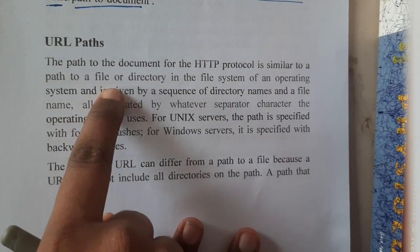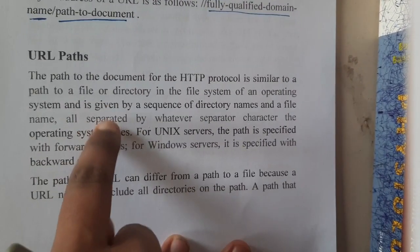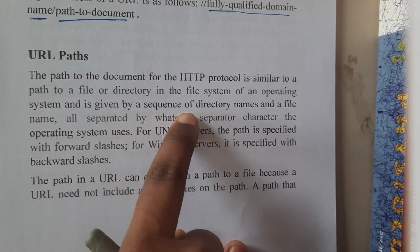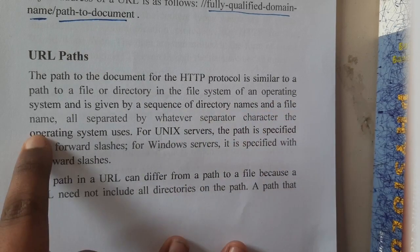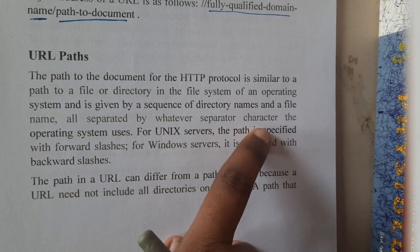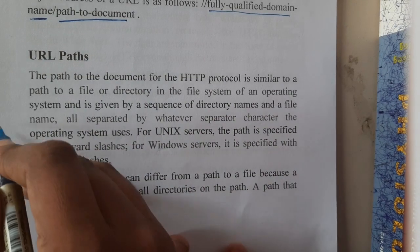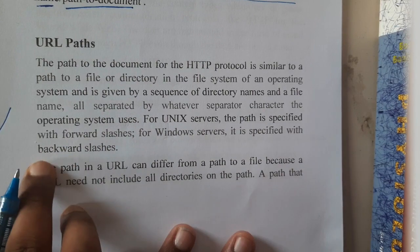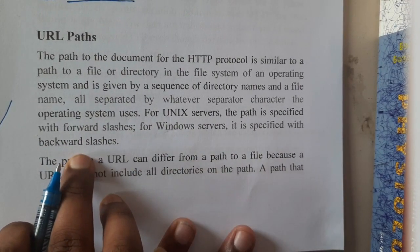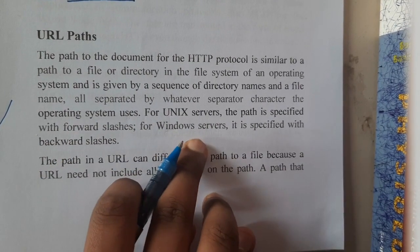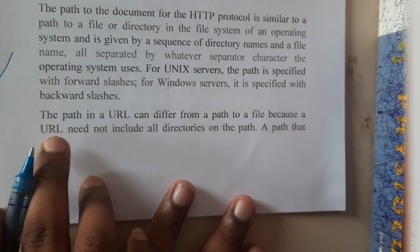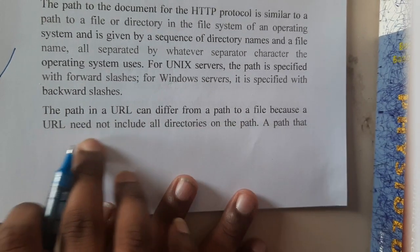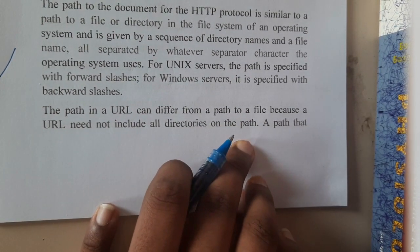The path to the document for the HTTP protocol is similar to the path of the file in the file system of the operating system. It is given by a sequence of directory names and file names, all separated by a separator character. For Linux servers the path is specified with the forward slash, and for Windows systems it will use the backslash.